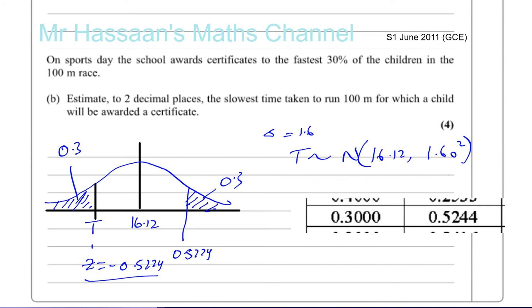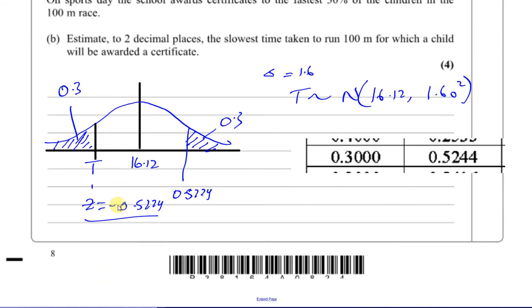So now we've got to find what time, what actual time gives us this value. This is like the standardized value, 0.5224 standard deviations below the mean. So the time is going to be given by, remember we have z equals x minus mu over the standard deviation. So now we're going to have our z value is minus 0.5224, and the time that we're looking for minus the mean which is 16.12 over the standard deviation, 1.6.